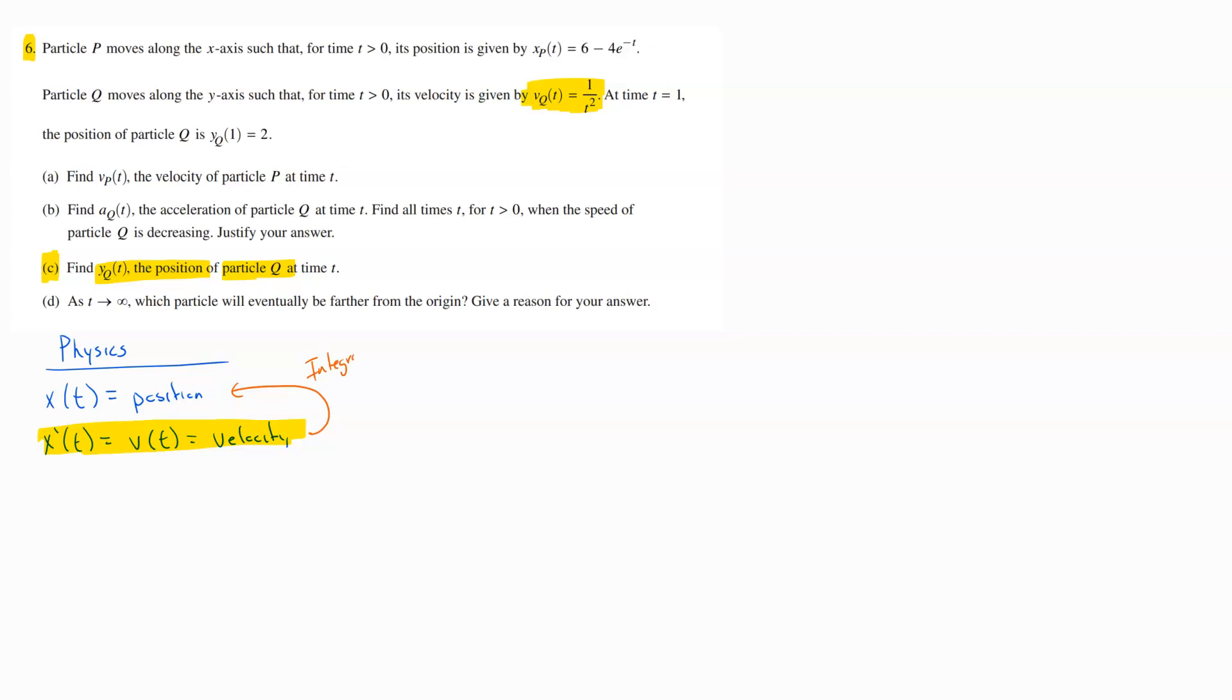We're going to be doing an anti-derivative to get back to that original function. Why we call it an initial value problem is because they give us a point that is on that original position function. We'll use that original point to find that plus C value that comes out whenever we do an indefinite integral.